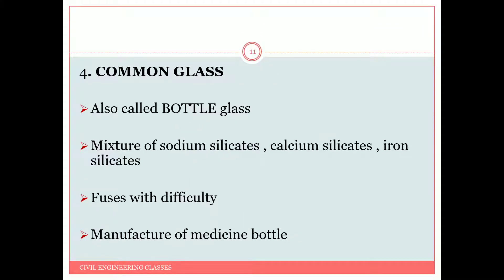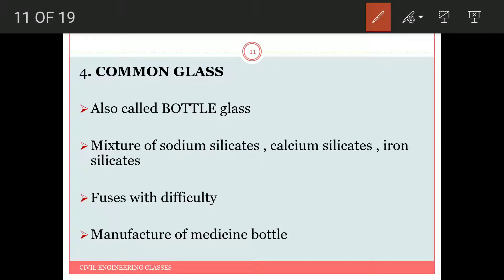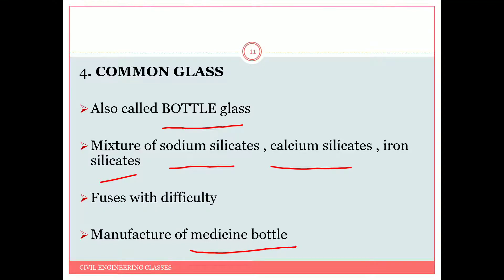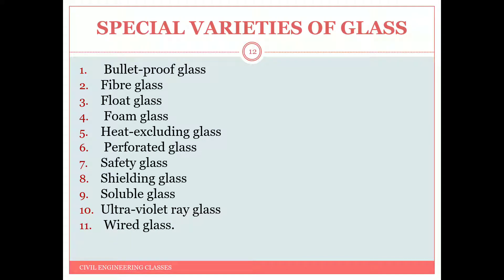Common glass is also called bottle glass. It is a mixture of sodium silicate, calcium silicate, and iron silicate. It fuses with very great difficulty and is majorly used for the manufacture of medicine bottles. These are the main types of glass.